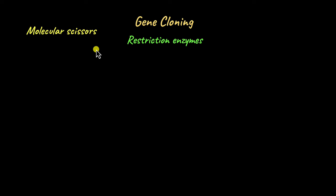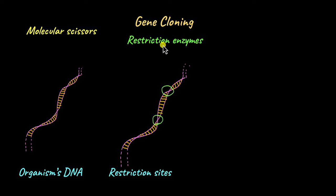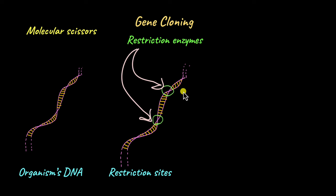In biotechnology, genes are isolated with the help of restriction enzymes. Restriction enzymes act as molecular scissors. So we're going to take the organism's DNA and treat it with restriction enzymes, which are going to identify specific restriction sites — palindromic sequences. The enzymes are going to cut wherever they find these restriction sites, and then you're going to isolate the target gene, the desired gene.